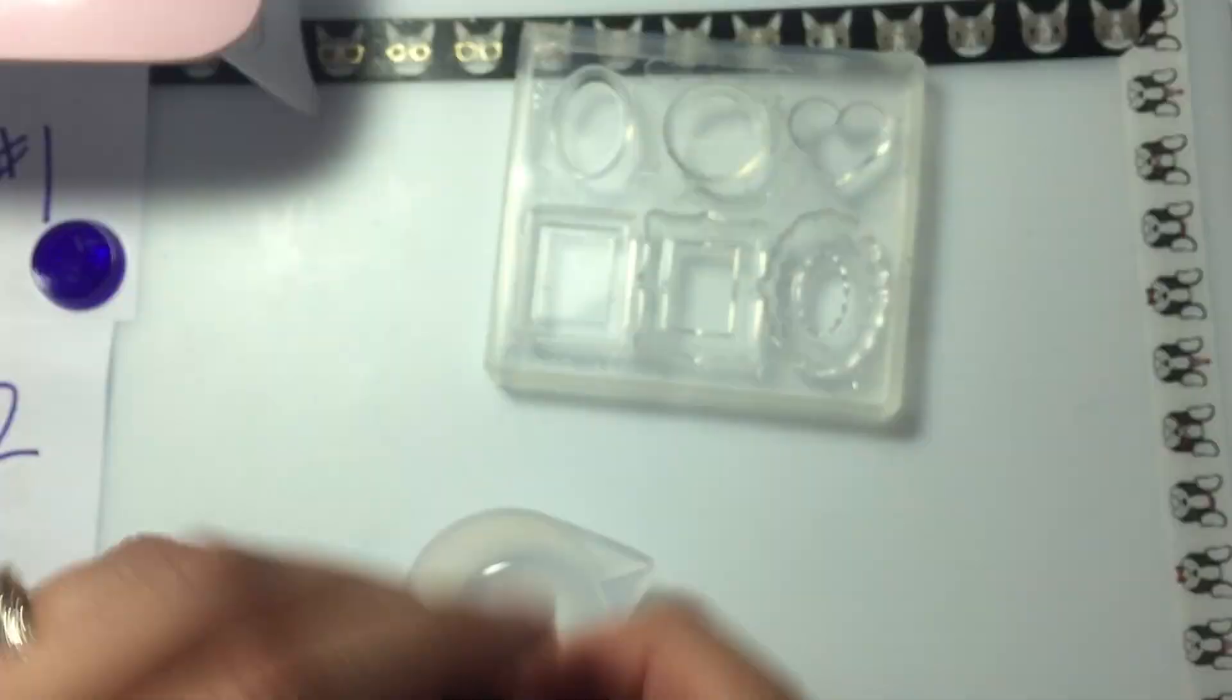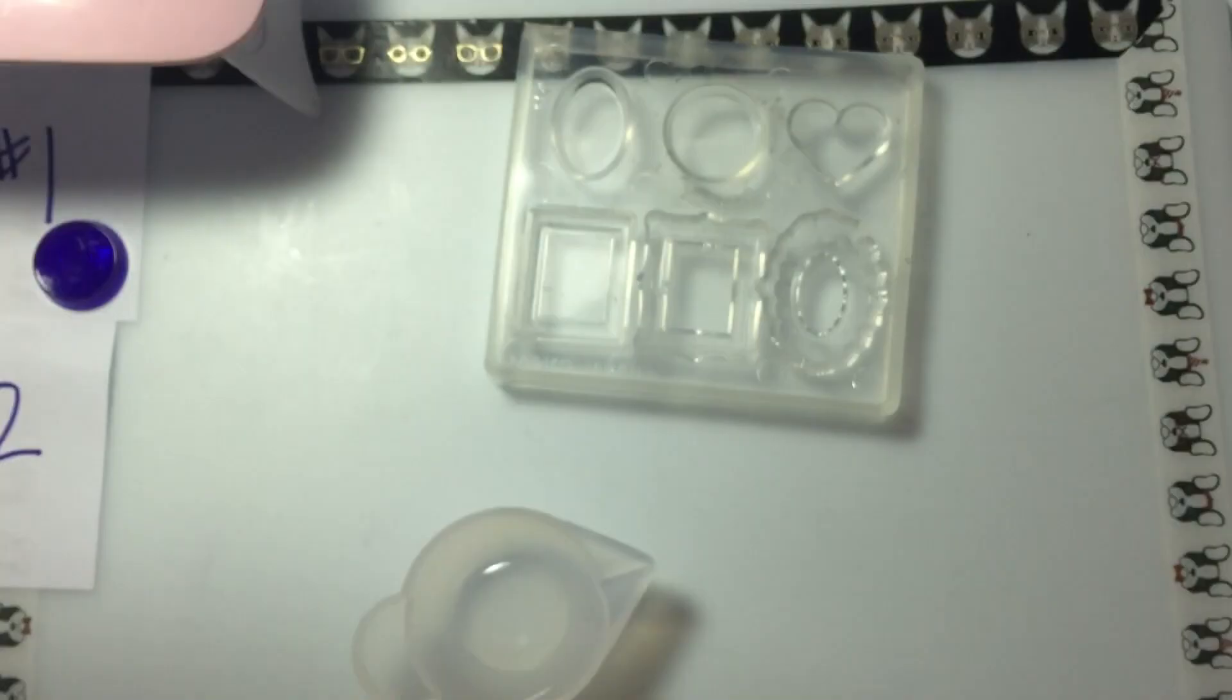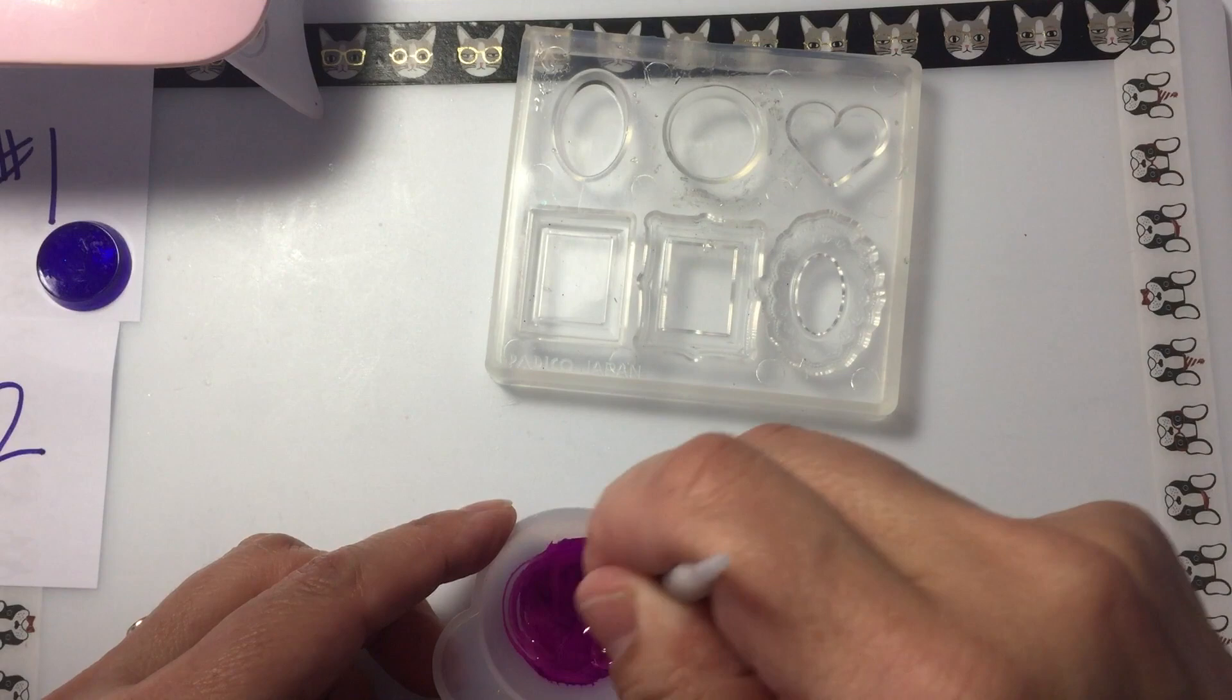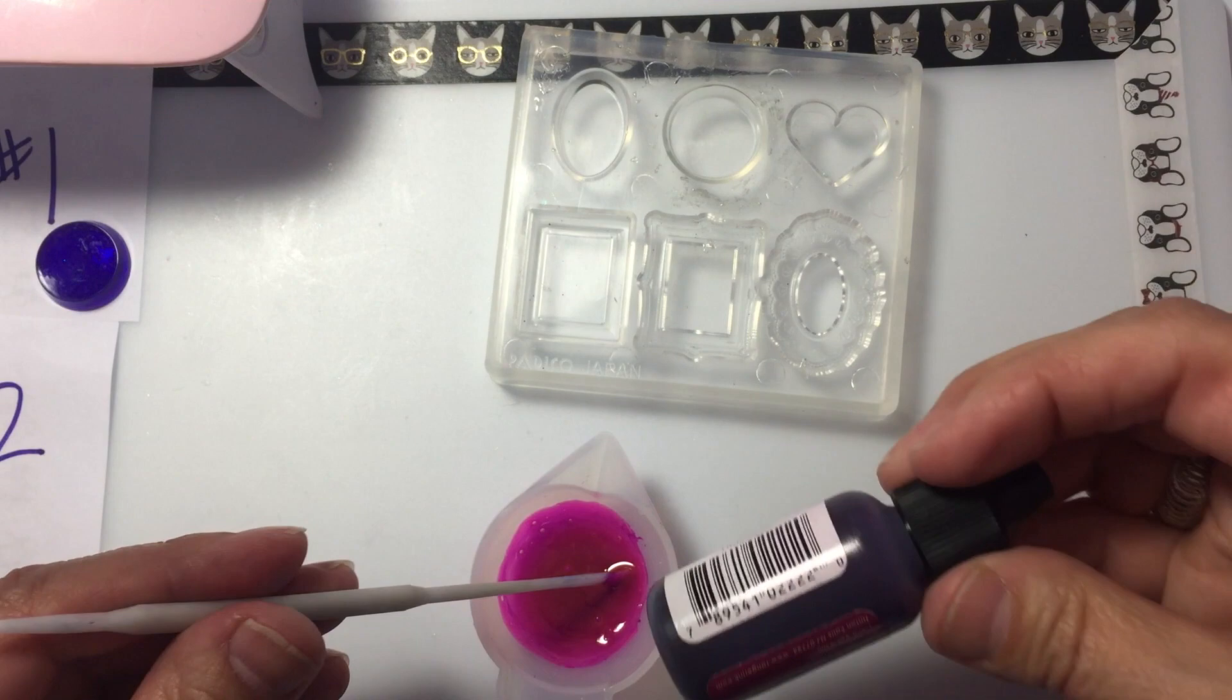The second method that I'm using is alcohol inks. If you're going to use these, make sure you do a test sample first because as you'll see in this video the color changes dramatically when it interacts with the UV resin. And also note that some alcohol inks may fade over time.